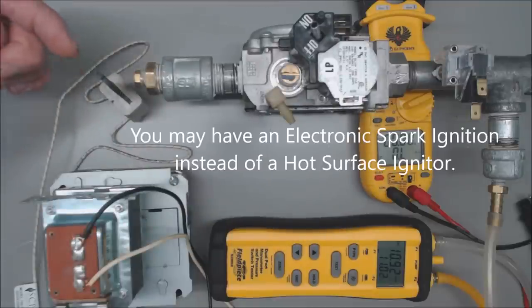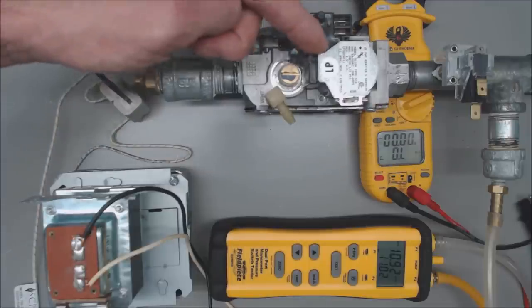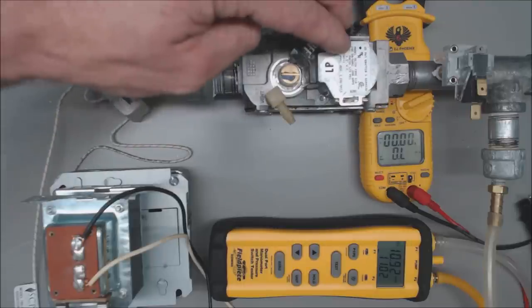After that the hot surface igniter turns cherry red, whether that's a 24 volt or 120 volt hot surface igniter, and then the gas valve gets powered with 24 volts.